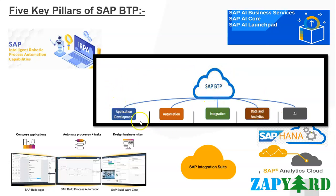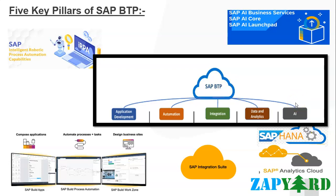So, remember the short form AIDA: A stands for application development, the other A stands for automation, I stands for integration, D stands for data analytics, and the last A stands for AI. All these pillars combined work together to provide a comprehensive platform for businesses to build, integrate, and extend applications in the cloud, enabling digital transformation and innovation.